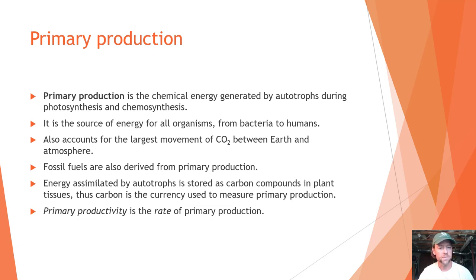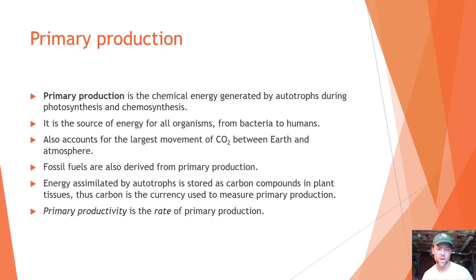Energy assimilated by autotrophs is stored as carbon compounds in plant tissues, and thus carbon is the currency we use to measure primary production. Primary productivity is the rate of primary production.